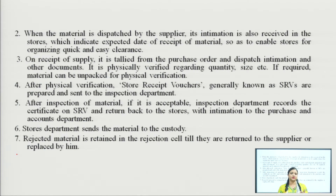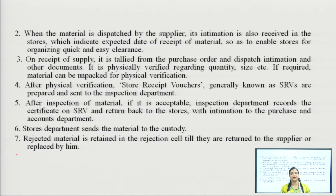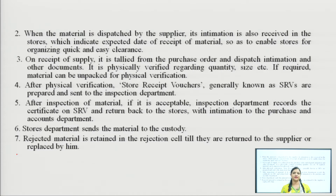These are the sequential steps of how material receipts are handled by retailers. When the material is dispatched by the supplier, its intimation is also received in the store, giving information about the date of receiving the material — on what particular date the retailer will get the order. On receipt of supply, it is tallied with the purchase order — whatever order was given by the concerned department must be verified that the received product matches the purchase order given to the supplier or production department. Dispatch intimation is also given to the material department so they get ready with cash for payment to the supplier.